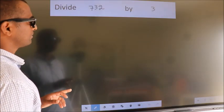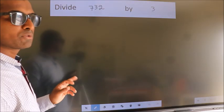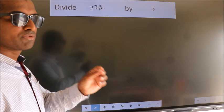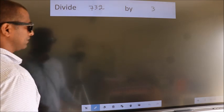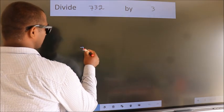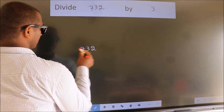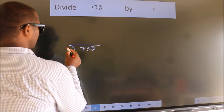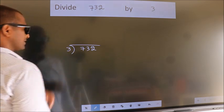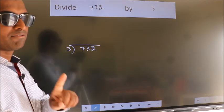Divide 732 by 3. To do this division, we should frame it in this way. 732 here. 3 here. This is your step 1.